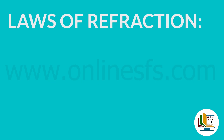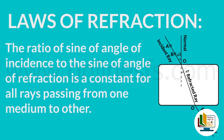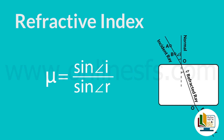Let's see the laws of refraction now. The incident ray, the normal at the point of incidence, and the refracted ray all lie on the same plane — incident ray, point of incidence per normal aur refracted ray teeno same plane par hi laye karenge, as you can see in the diagram. The ratio of sine of angle of incidence to the sine of angle of refraction is a constant for all rays passing from one medium to another. Is constant ratio ko hum refractive index of the second medium with respect to the first medium kehte hain — that is, refractive index equals to sine angle i upon sine angle r. This is also Snell's law.